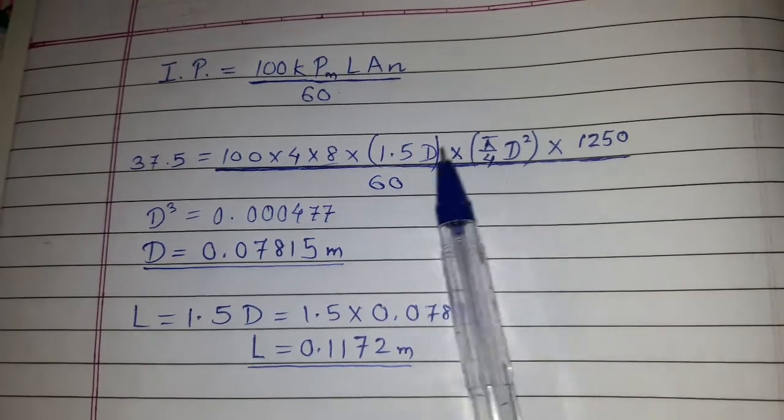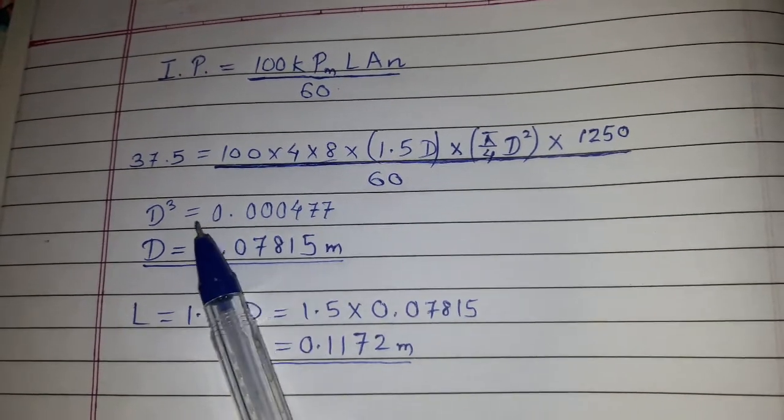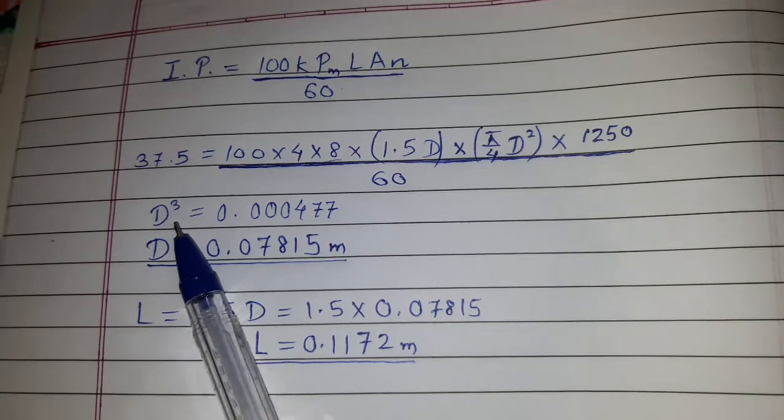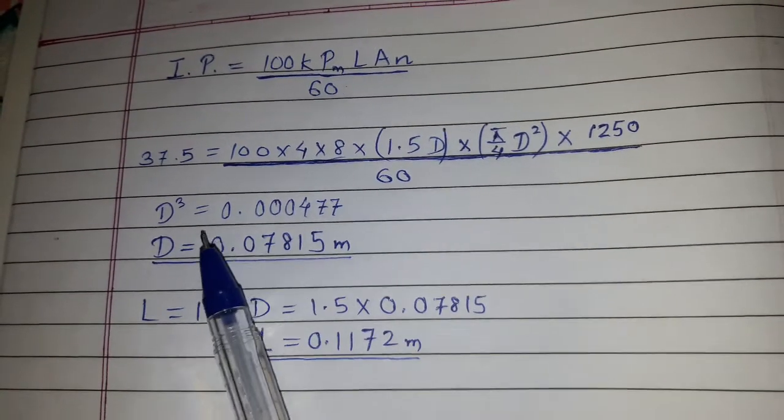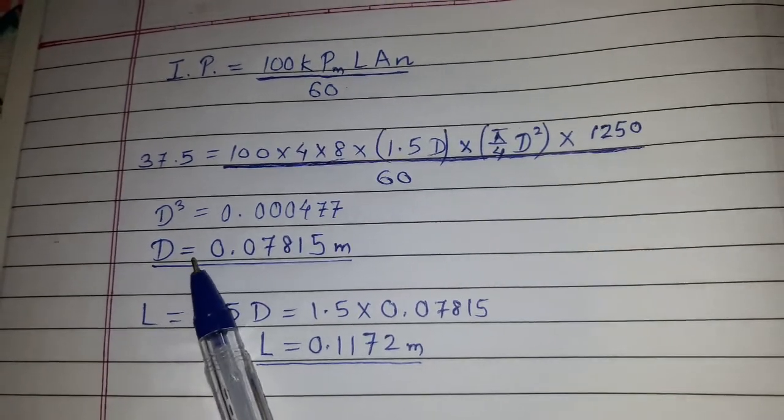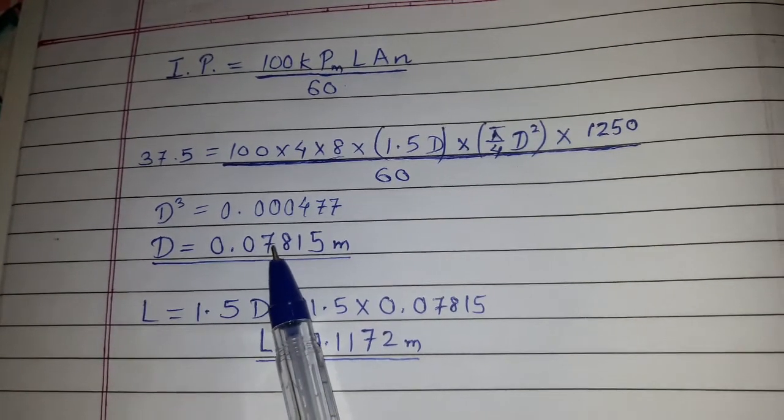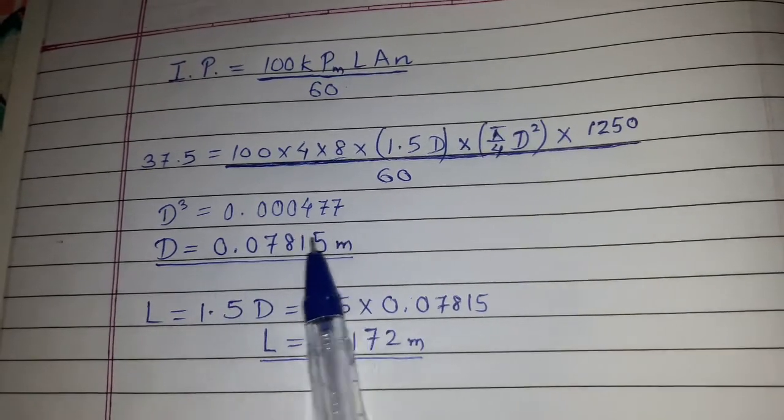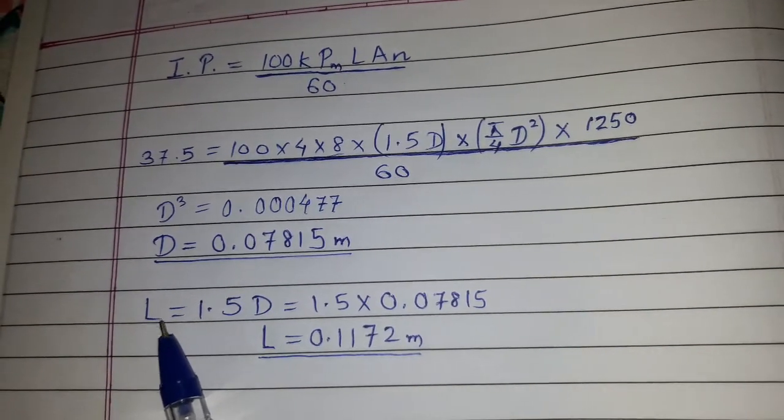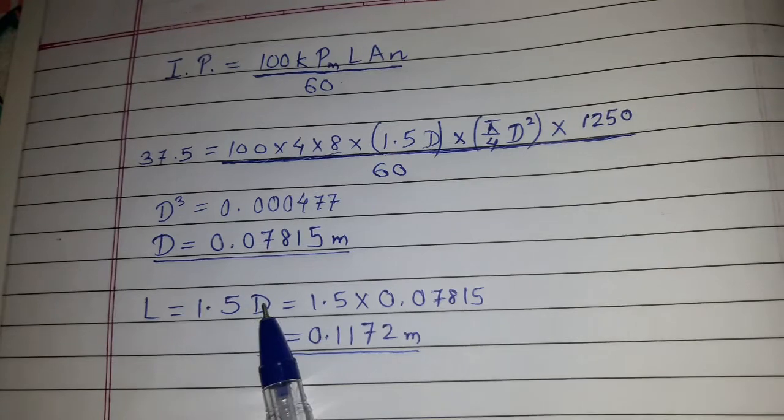With this we have here D and here D squared, we can calculate D cubed equals 0.00477. Therefore, capital D equals 0.07815 meter. Once we have capital D, we can calculate L because L equals 1.5D.